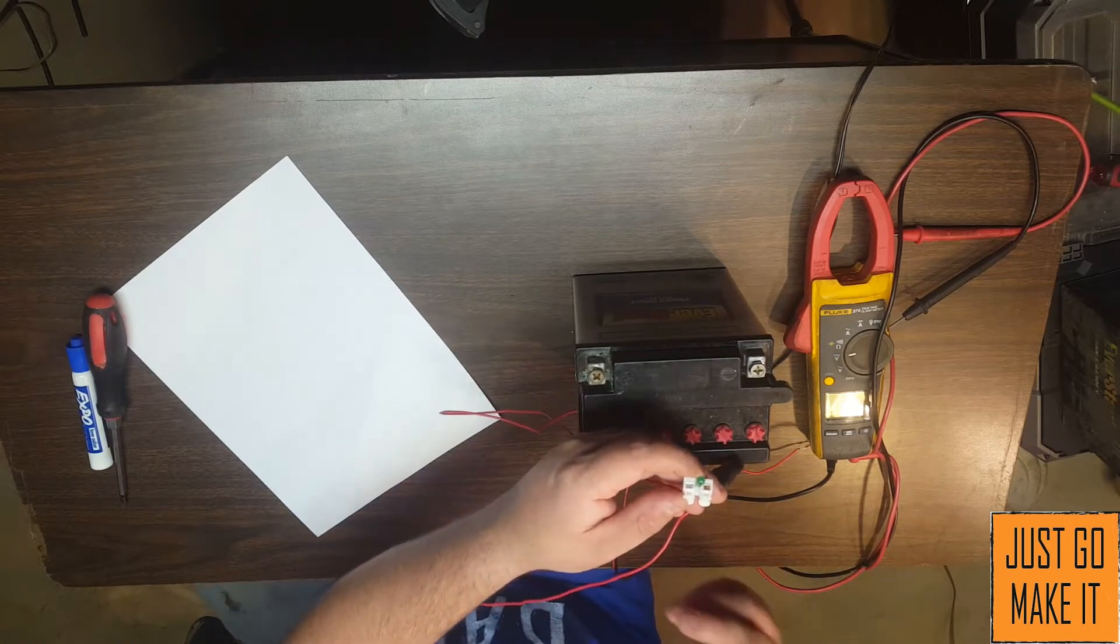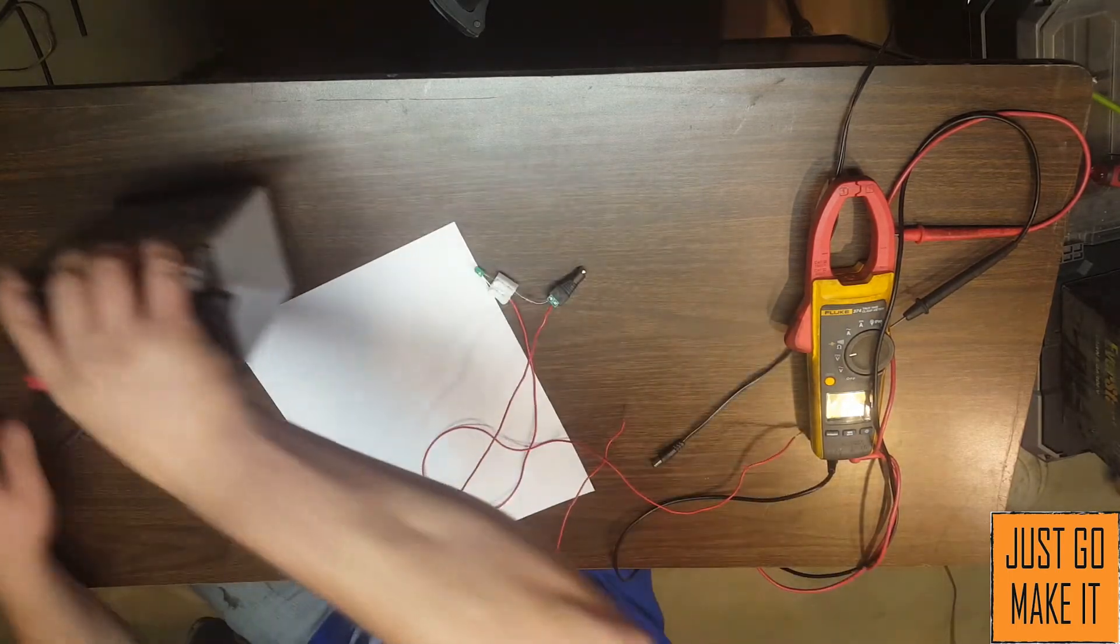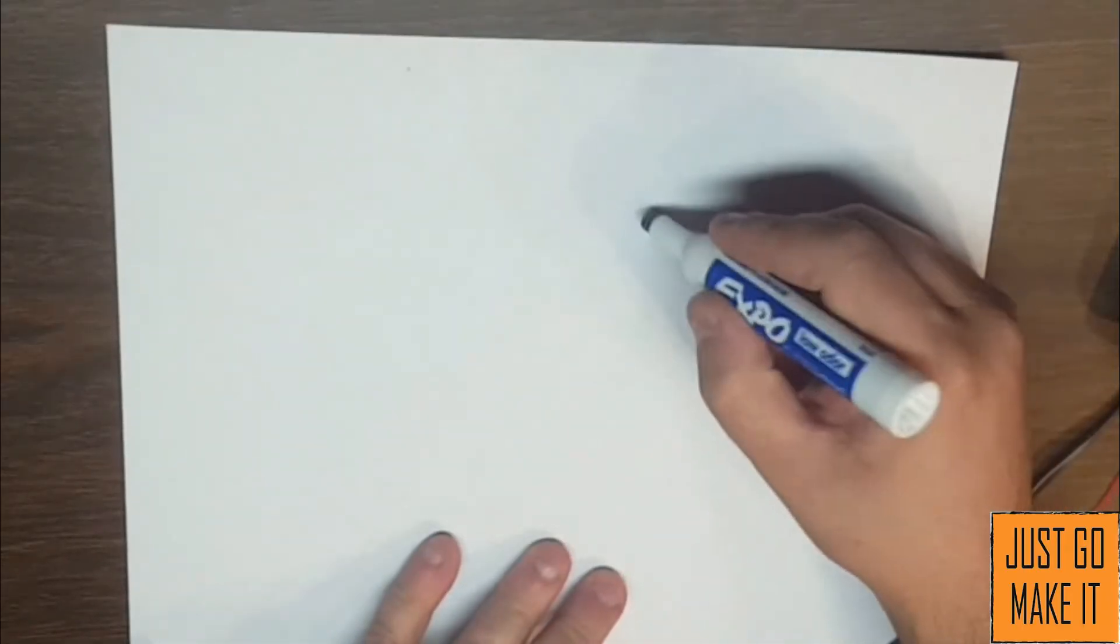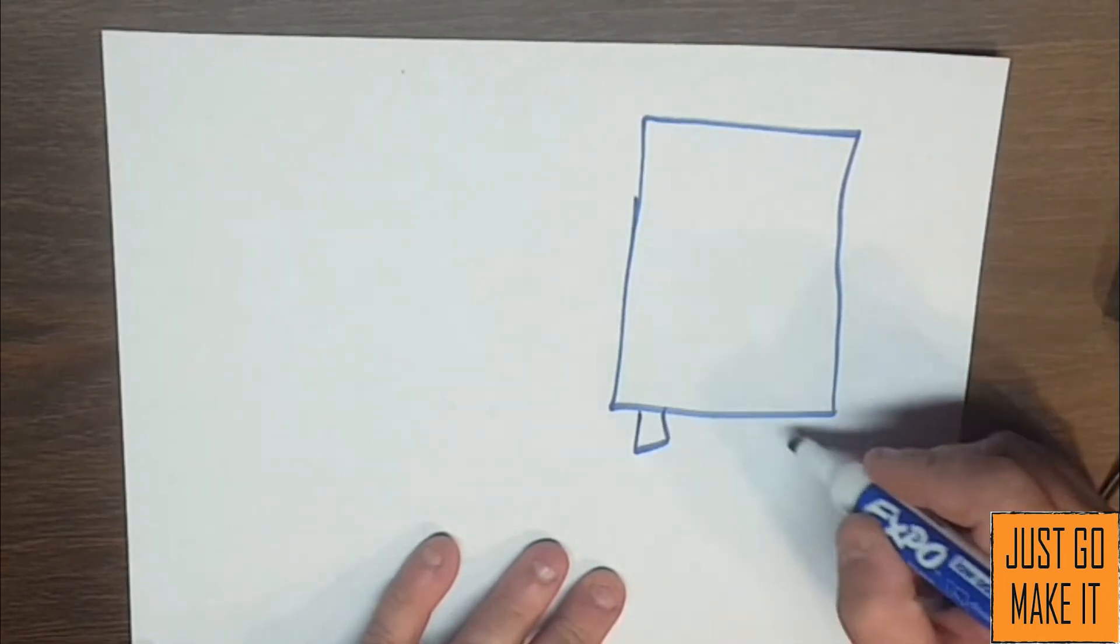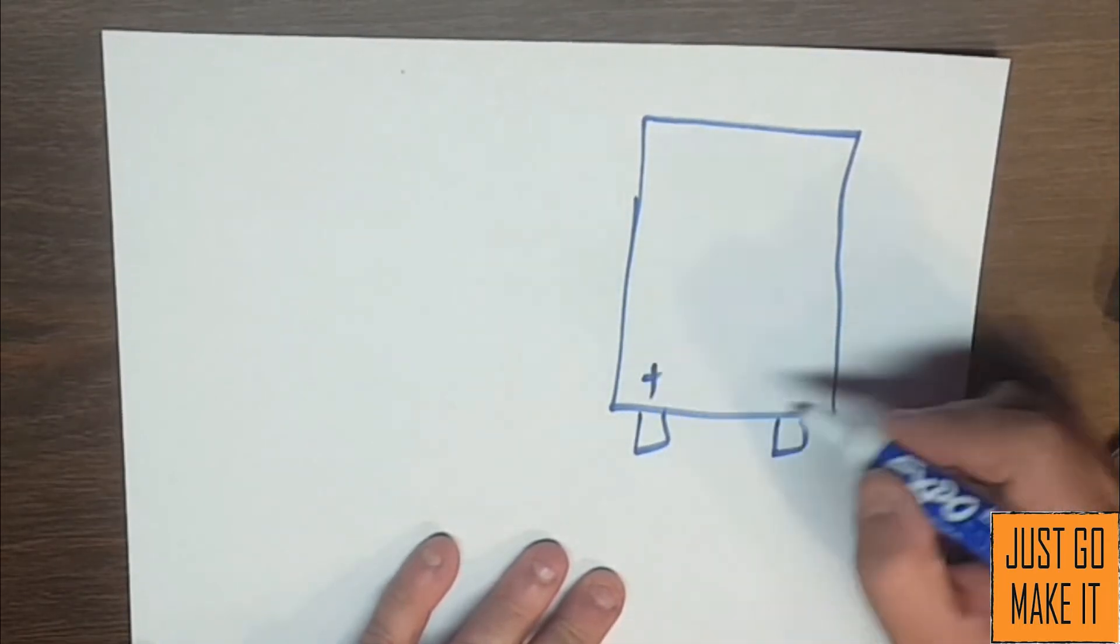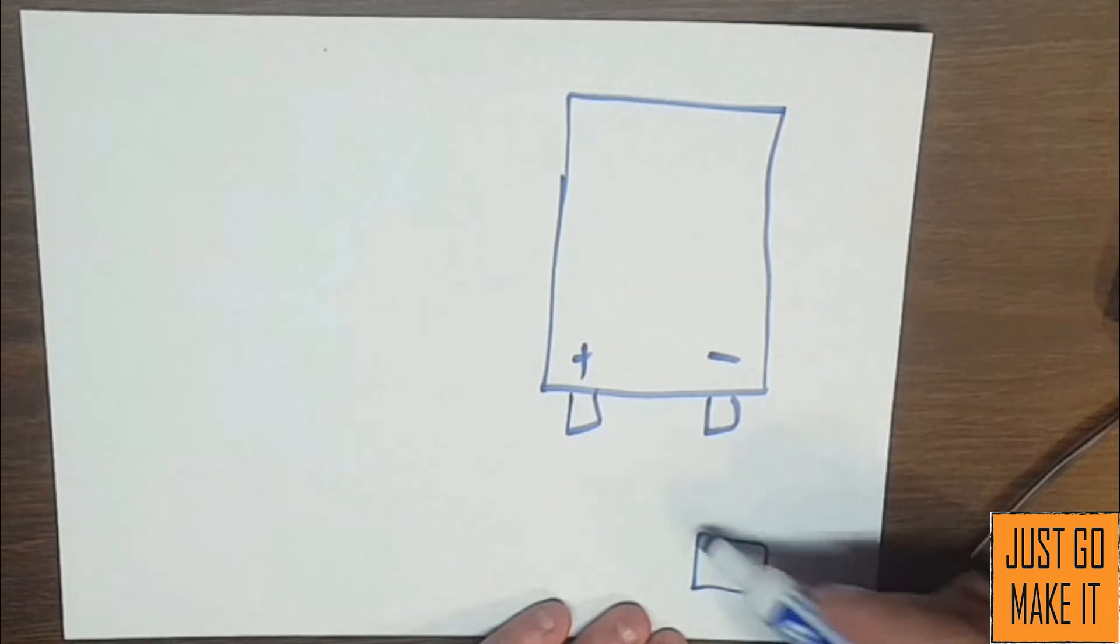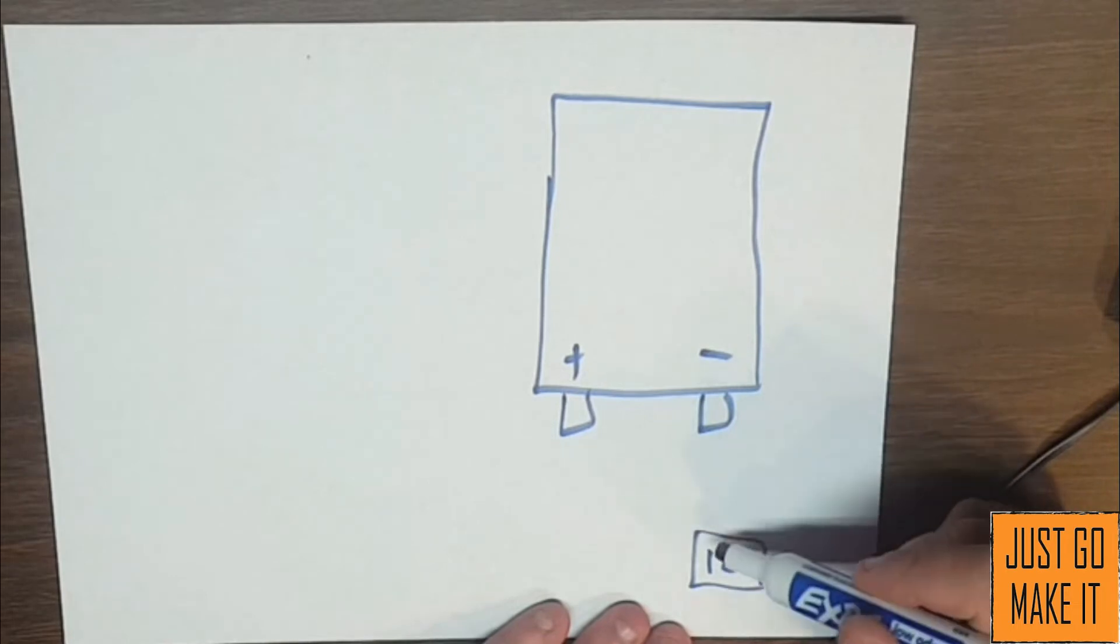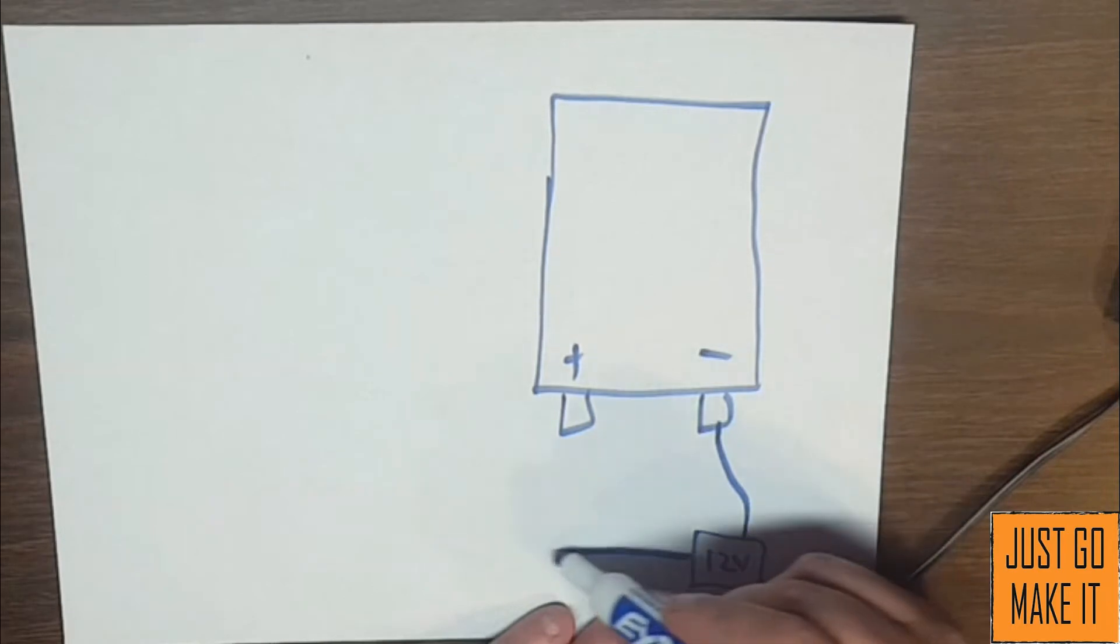So this is my thinking. Let me get a piece of paper here and show you my theory of how this will work. All right, this is my battery terminals here, my positive and my negative. Now my little 12 volt wall wart right here, I'm going to connect the negative side of it straight to the battery.